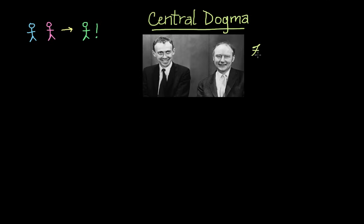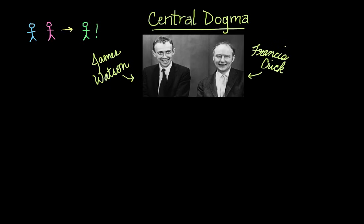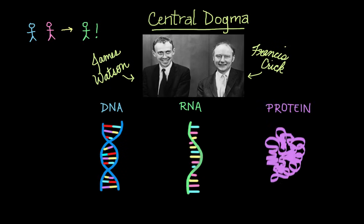Some very clever scientists, Francis Crick and James Watson, or Watson and Crick as they're often referred to, are credited with discovering this dogma, which they say deals with the detailed residue-by-residue transfer of sequential information. Or, as Marshall Nirenberg, who won the Nobel Prize in Physiology and Medicine, once said: DNA makes RNA makes protein. And I think this simple explanation really just says it all.